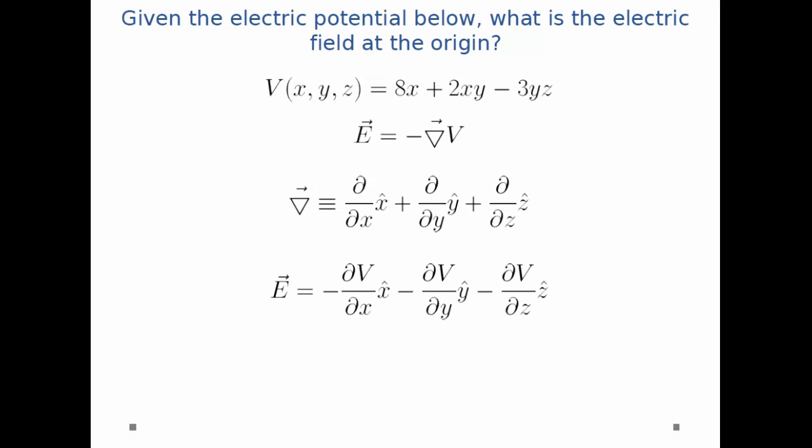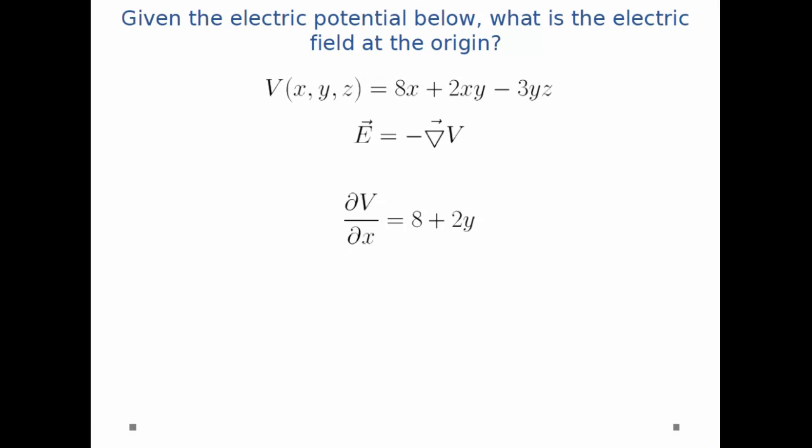And now this is just a math problem. Let's just take each term and look at it individually. So dV/dx if you just take the derivative of that very first expression with respect to x you get 8 plus 2y. If you take the derivative of the first expression with respect to y you get 2x minus 3z. And if you take the derivative with respect to z you get minus 3y.